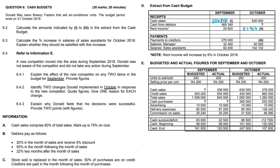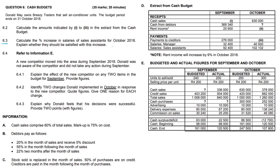Amount iii is payments to creditors. Stock sold is replaced in the month of sale, and 50% of purchases are on credit, paid in the following month. We take total sales of 1,008,000, multiply by 50% to get the credit amount, then divide by 1.75 to factor in the 75% markup on cost. This gives us 288,000. Note for amount i: you could also do 1,008,000 minus 403,200 to get 604,800 — either method works.